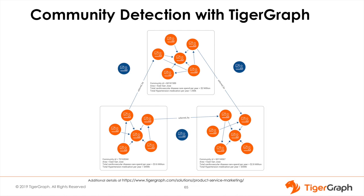Hub and community detection can be applied to multiple industries in addition to pharmaceutical and healthcare. In financial services, it can identify the most influential merchants or customers and the communities driven by them, and also find investment advisors driving investments for a particular type of stock, mutual fund, or commodity. It is useful in government to understand the origin and spread of infectious diseases or identification of suspected terrorist networks linked to radicalized communities. Hub and community detection is also immensely useful in cybersecurity, where it can identify multiple employees, machines, or IP addresses acting in collusion to compromise network, data, or application security.